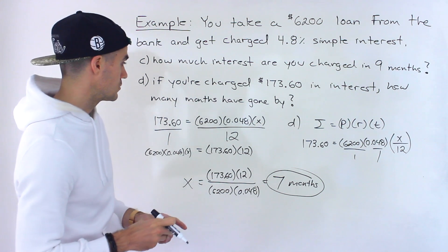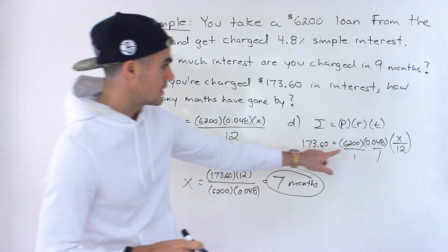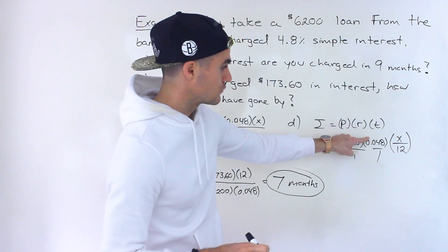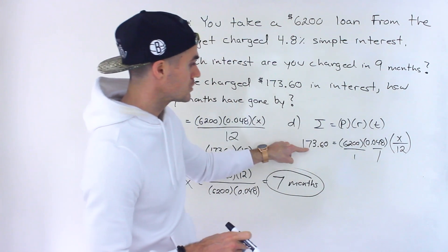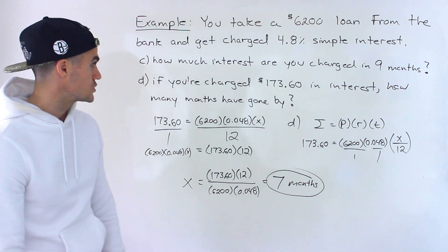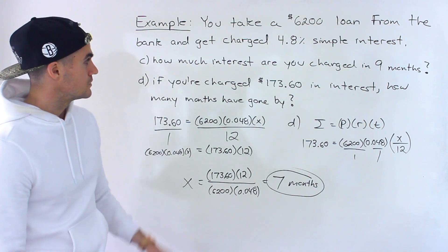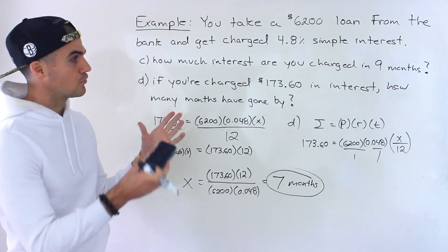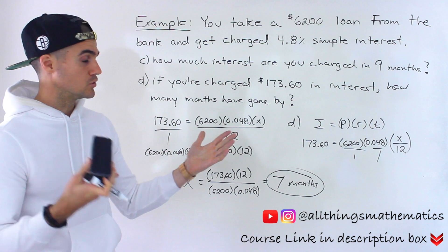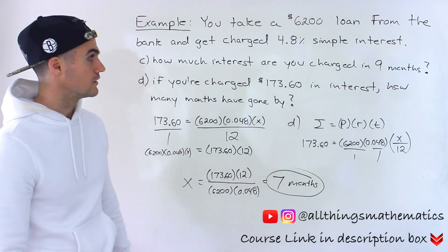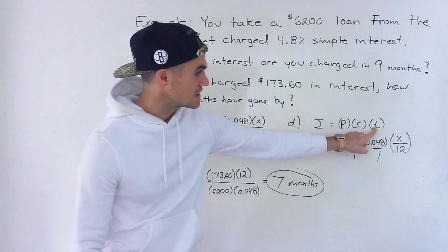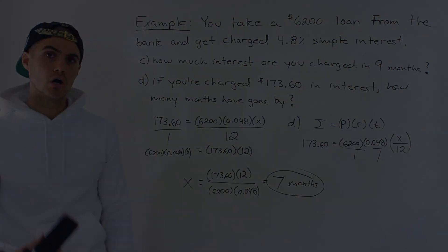You can check your answer by plugging it back in: take 6,200 times 0.048 times 7 over 12, and you should get a number very close to $173.60. In different scenarios, just be careful with what you're given — whether you're working with months, days, or whole years — and make sure you're adjusting the T variable accordingly.